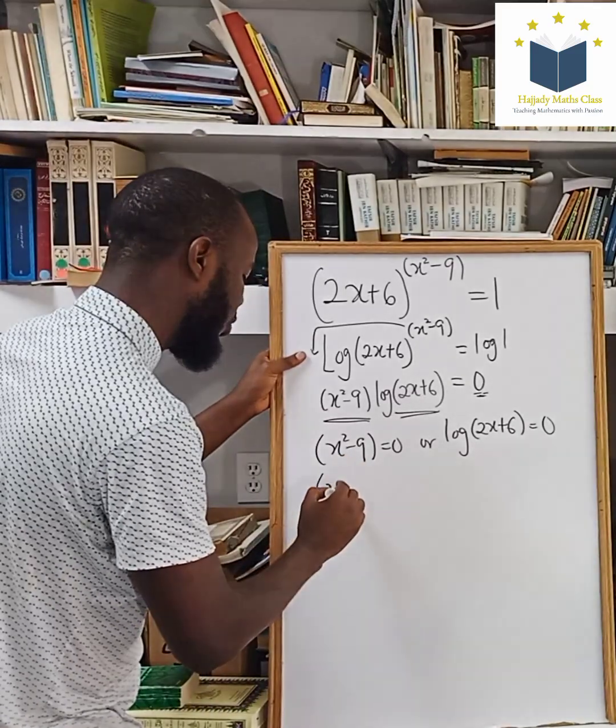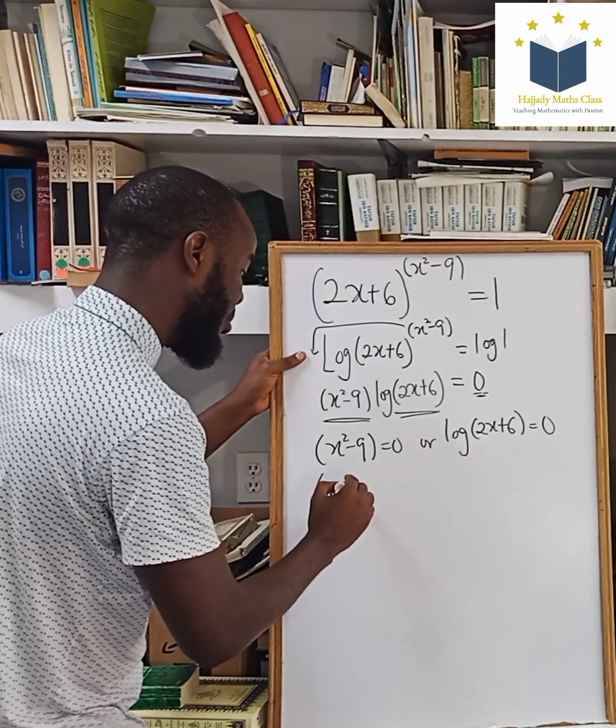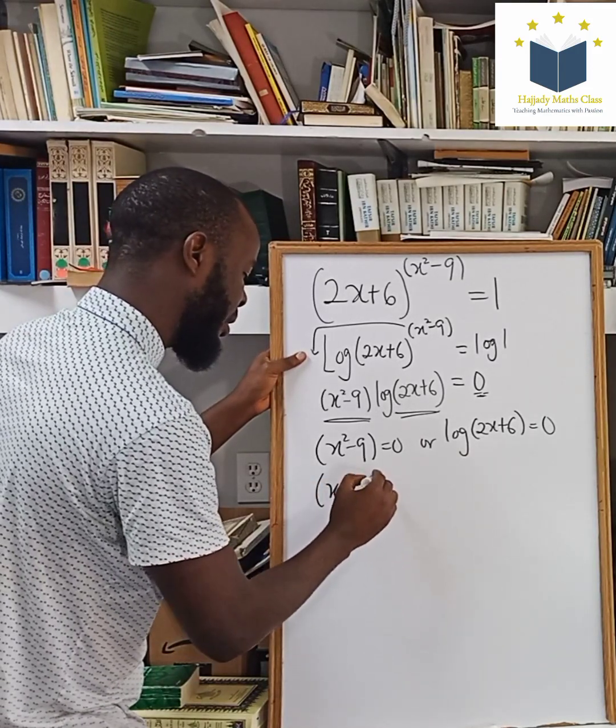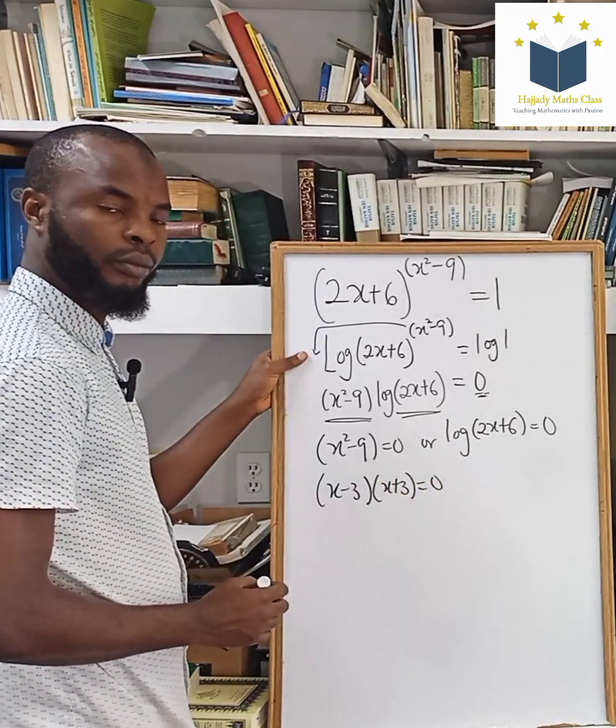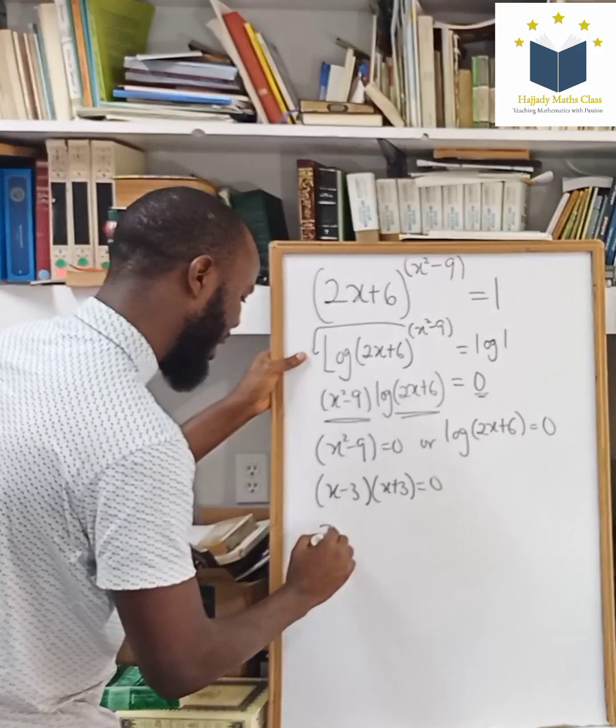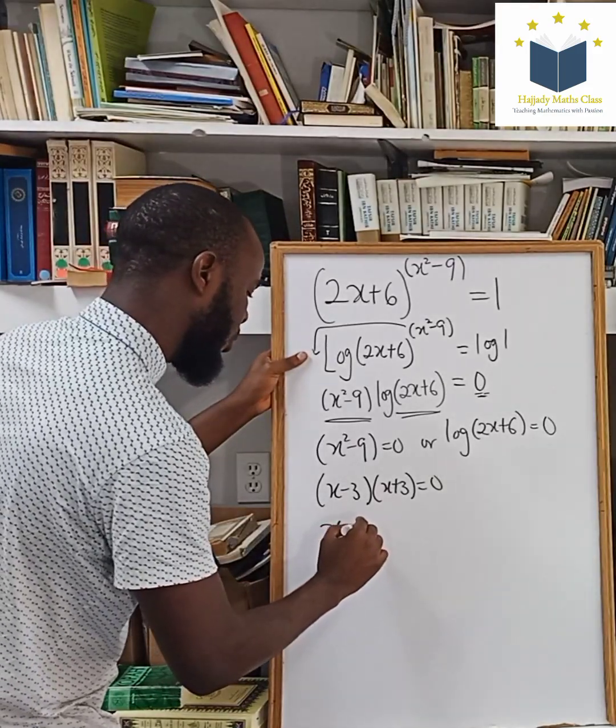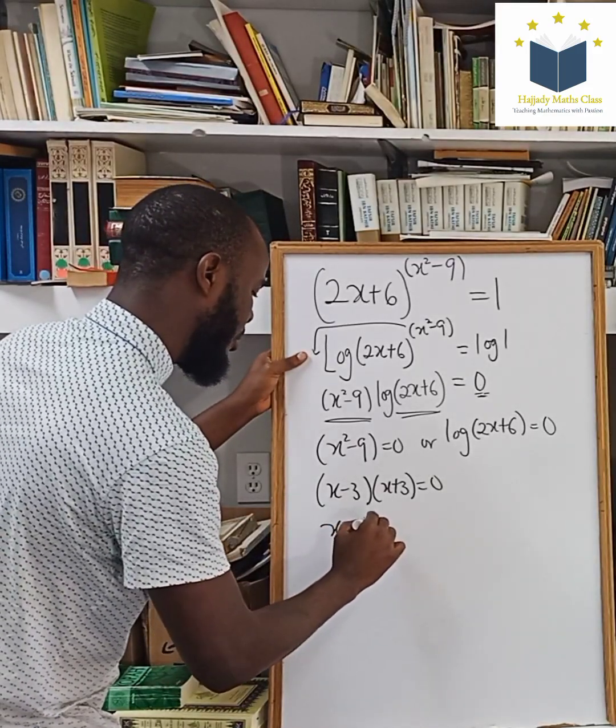this is going to give us x squared, x minus 3, x plus 3 equals to 0. So this shows that my x equals to plus or minus 3.